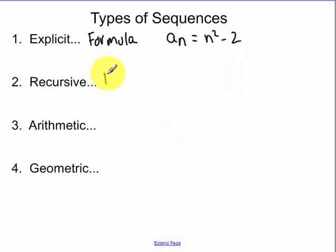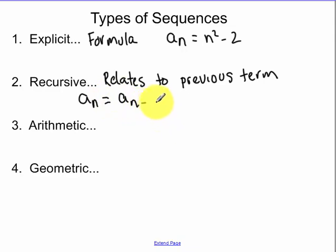Recursive relates to a previous term. So you have your N, your A sub N term, you take something and you do something with the term previous. And you say add 3 to it and multiply it by 4.